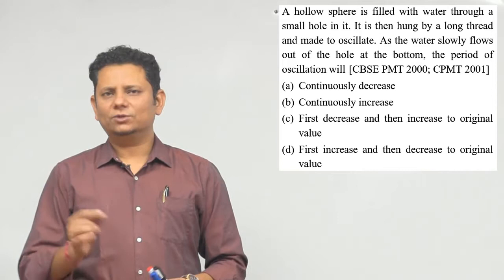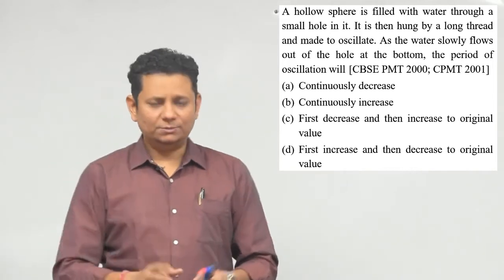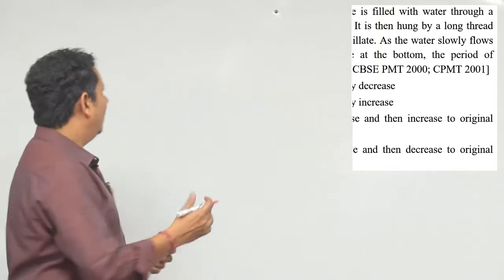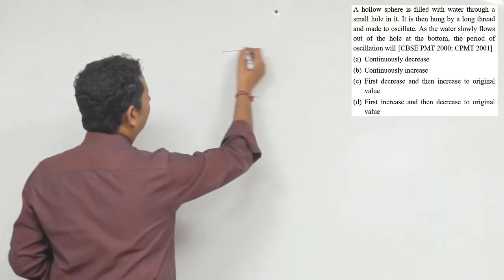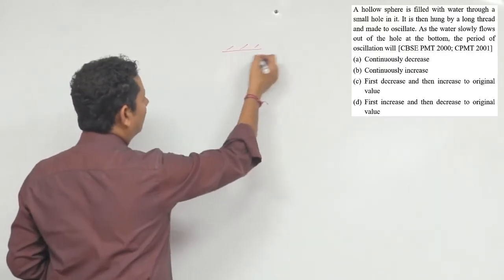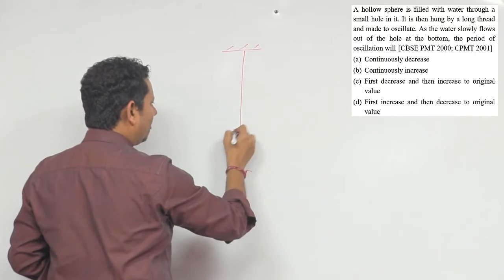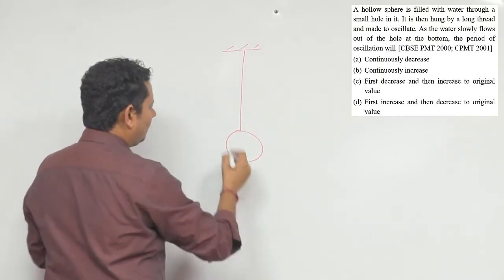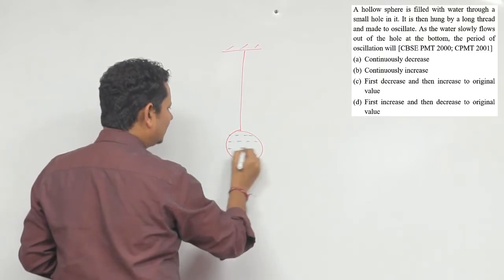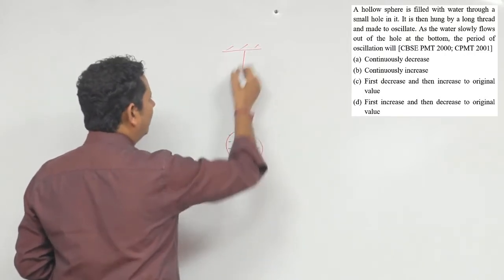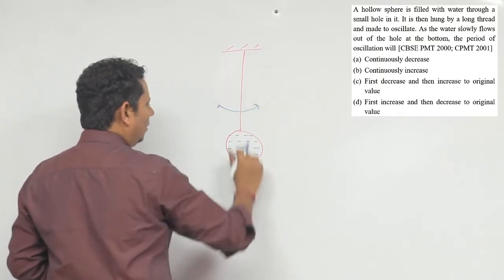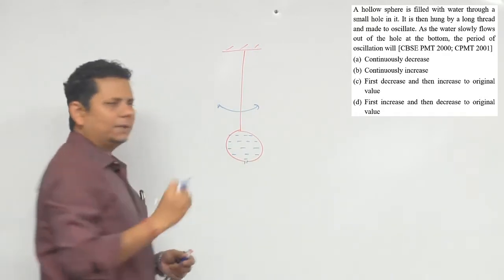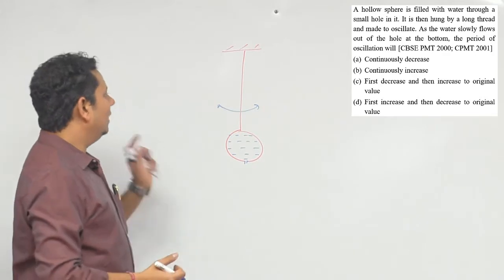यह बहुत अच्छा conceptual सवाल है। अच्छे students इस बात को समझ पाते हैं। हमारा scenario यह है कि यह एक sphere है और इस sphere के अंदर पानी भरा हुआ है। यह oscillate कर रहा है ऐसे-ऐसे, और यहाँ पे एक छोटा सा छेद है उस छोटे से छेद से पानी टप-टप करके ड्रिप हो रहा है।